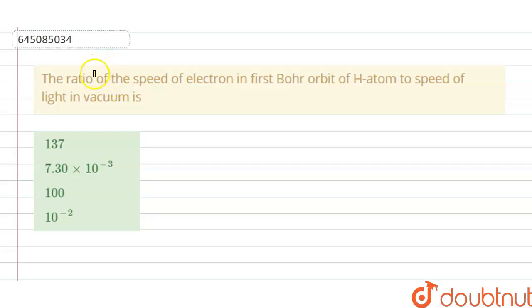Hello students, today our question is: the ratio of speed of electron in first Bohr orbit of hydrogen atom to the speed of light in vacuum is - ABCD options are given here. So we have to choose the correct option.